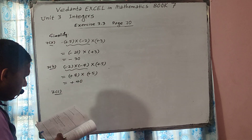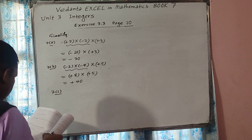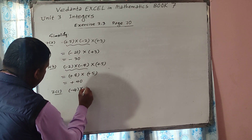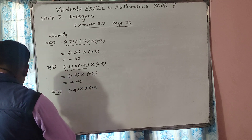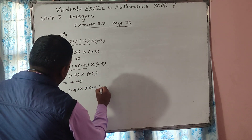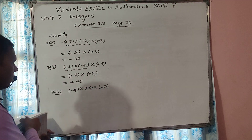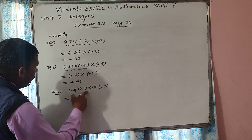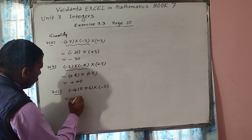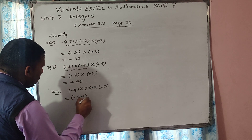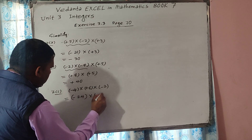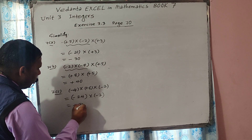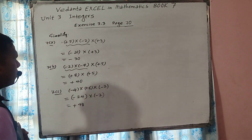Now 7C: minus 4 into plus 6 into minus 2. Look at the first two numbers — minus into plus gives minus, so 4 times 6 is 24, giving minus 24. Then minus 24 into minus 2 — minus into minus gives plus, so 24 times 2 is 48. Plus 48 is the answer.